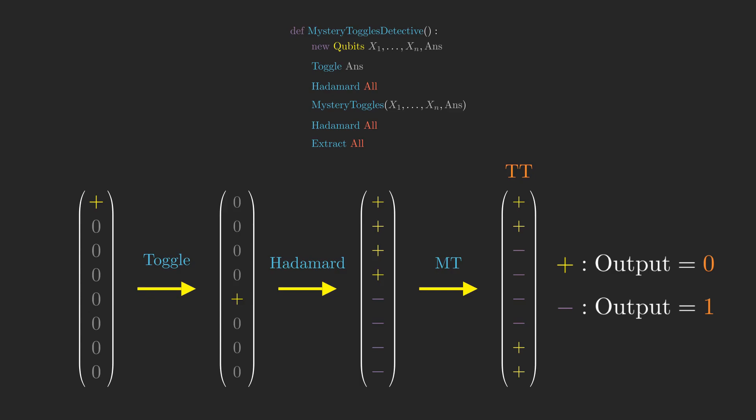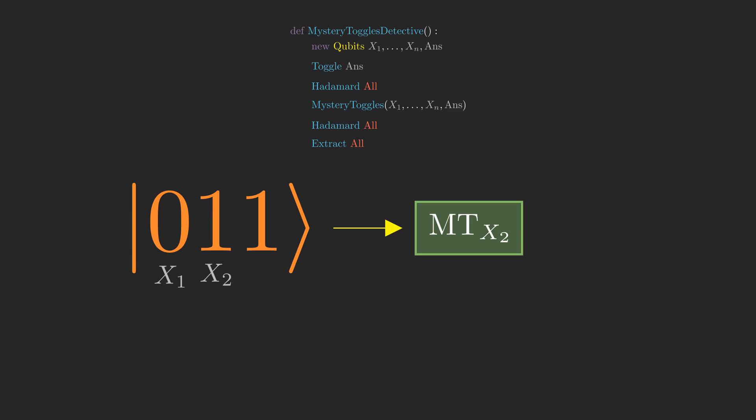If you remember from the last video, when we do the instruction hadamard all from this truth table state, all of the amplitude ends up on just one state, where the zeros and ones indicate the absence or presence of particular lines of code in the version of Mystery Toggles being used. This string of bits that encodes the version of Mystery Toggles used is especially useful, so let's give it the name Goal.